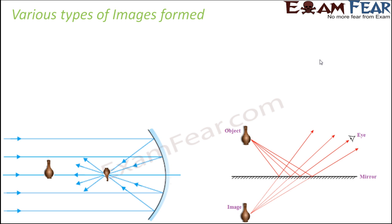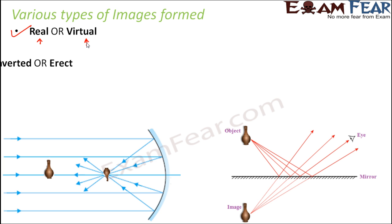There is a variety of images that can be formed using mirrors, and mirrors themselves are of various types: plane mirrors and spherical mirrors. Spherical mirrors are further of two types: concave mirrors and convex mirrors. Depending on the type of mirror used and the way reflection takes place, the image formed will either be real — when reflected rays actually meet at a point — or virtual — when they appear to meet at a point.